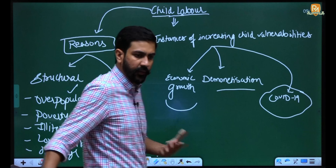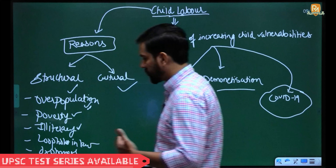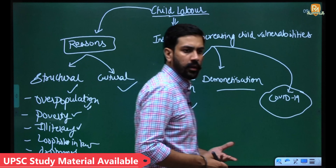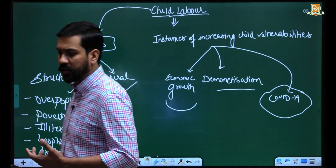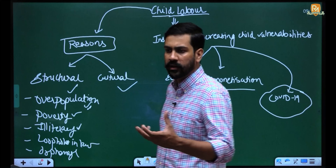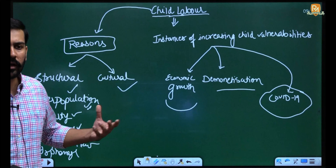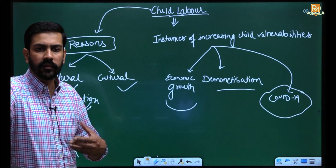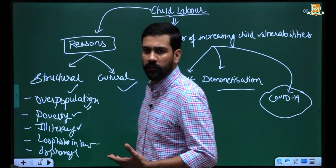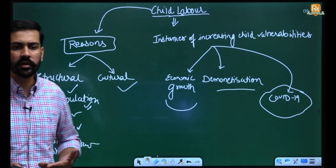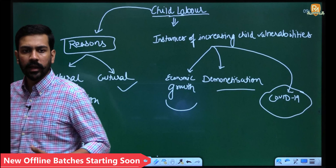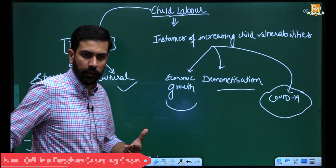There are loopholes in law. We have the Child Labour Act 2016, but implementation is not proper and prosecution of violators is not done. A study commissioned by an NGO found that over 2006 to 2011, from two to three thousand individuals held responsible for violations of child labor laws, only four to five convictions resulted. If prosecution is not there, the fear of law is not there — law will not act as a deterrent and individuals will keep violating the laws.